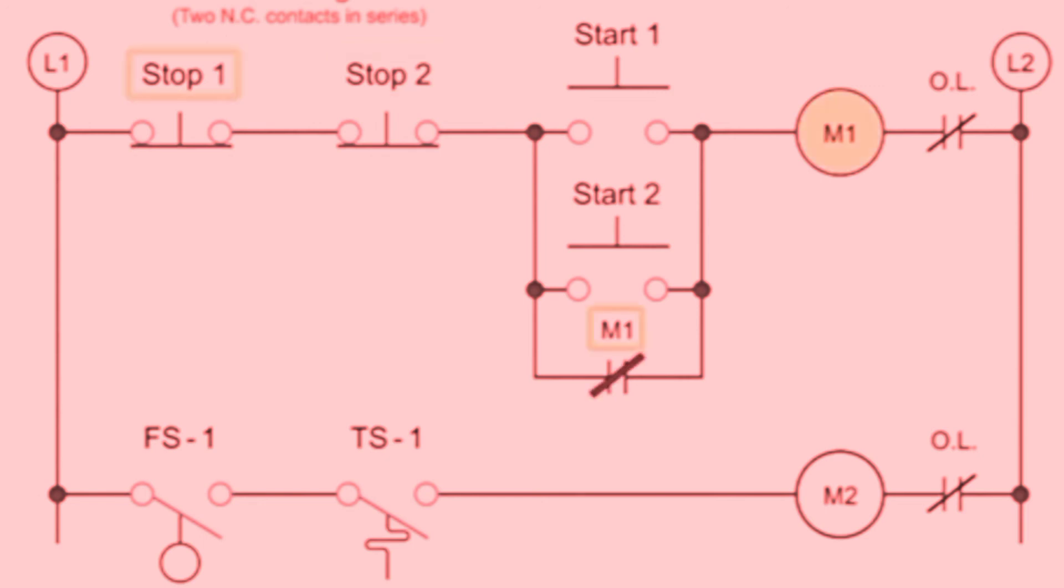In this arrangement, pushing stop button 1 or stop button 2, the M1 coil is shut off, and the M1 holding contact is deactivated.